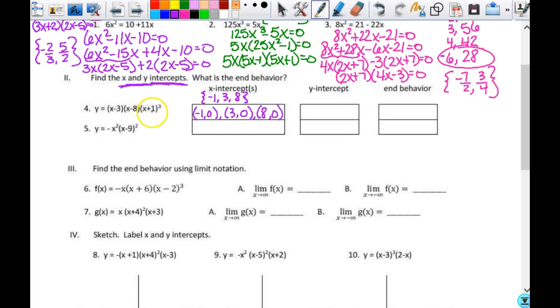Then my y intercepts to get that, I'll plug in 0 for x. That means I'm going to get a negative 3 times a negative 8 times 1 cubed. 1 cubed is pretty easy. So I just have the 3 times the 8, which is 24. It's an intercept, and so I need an ordered pair. That's 0, 24. End behavior. The degree here is 3, 4, 5. So it's odd. And the leading coefficient is positive. So it's going to act like a cubic and look like that.